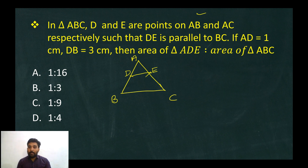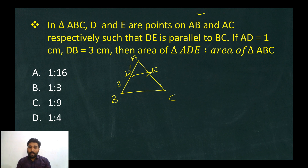AD is 1 cm and DB is 3 cm. We need to find the area of triangle ADE to the area of triangle ABC.